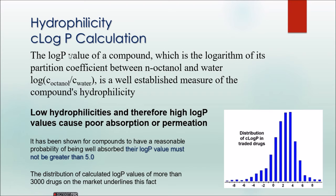The next important property is hydrophilicity, obtained as a result of the C log P calculations, where P stands for partition coefficient. Hydrophilicity represents more affinity toward water. The log P or partition coefficient calculation gives details about this, and it is calculated by comparing your compound between N-octanol and water. The formula is: log (C octanol / C water), established to measure a compound's hydrophilicity.